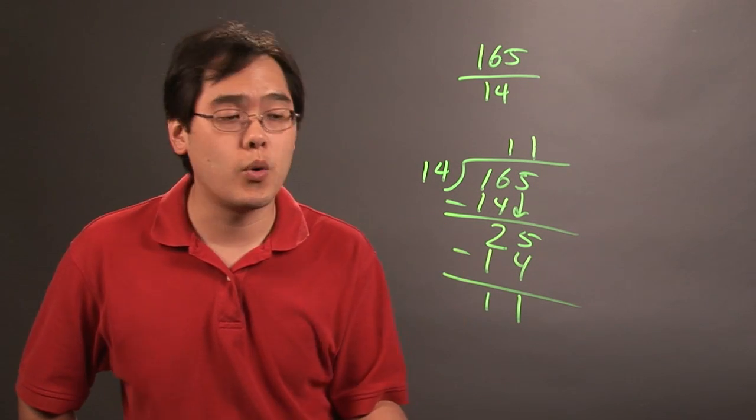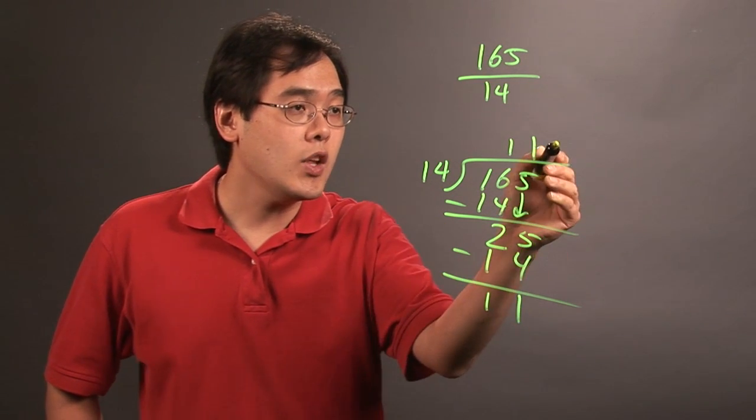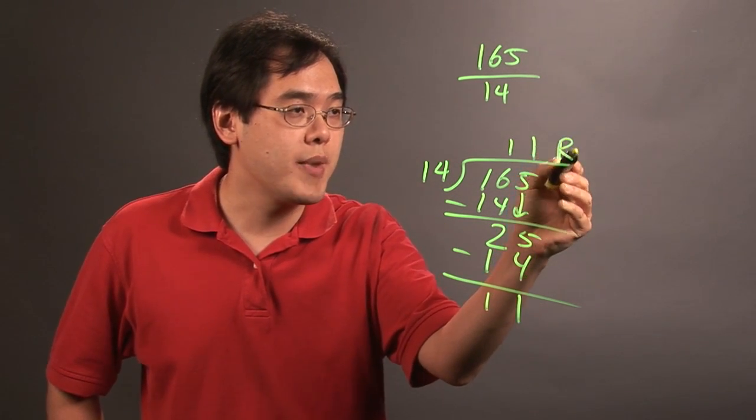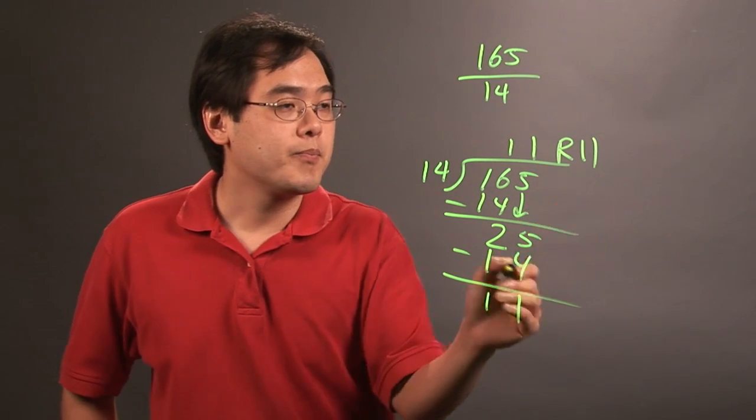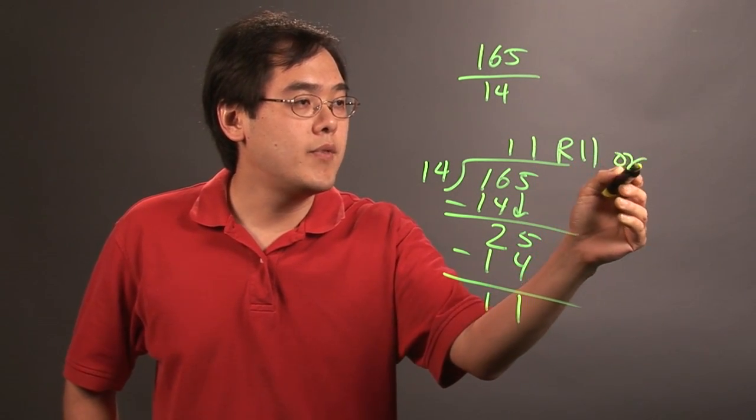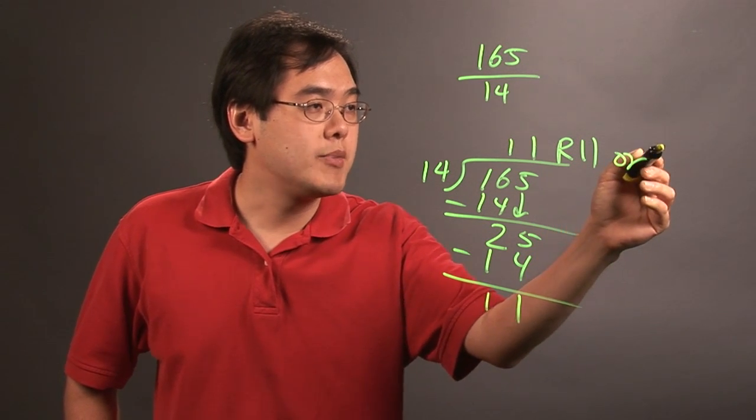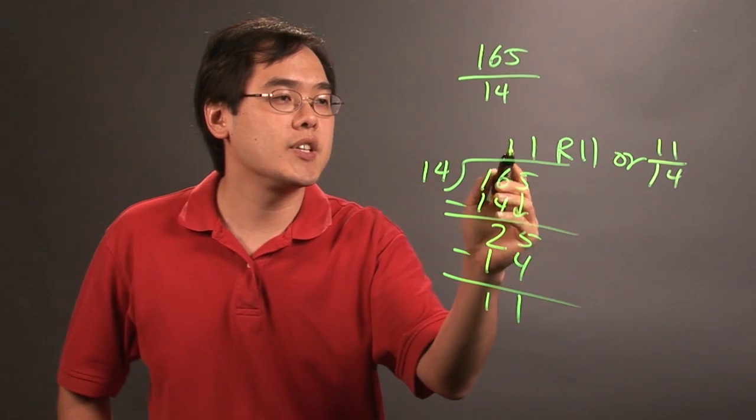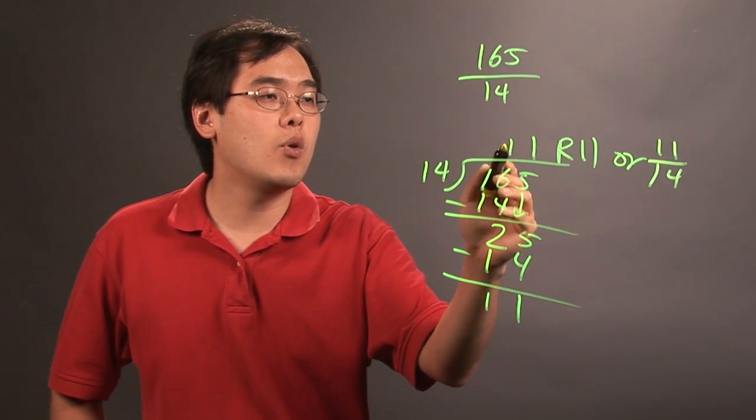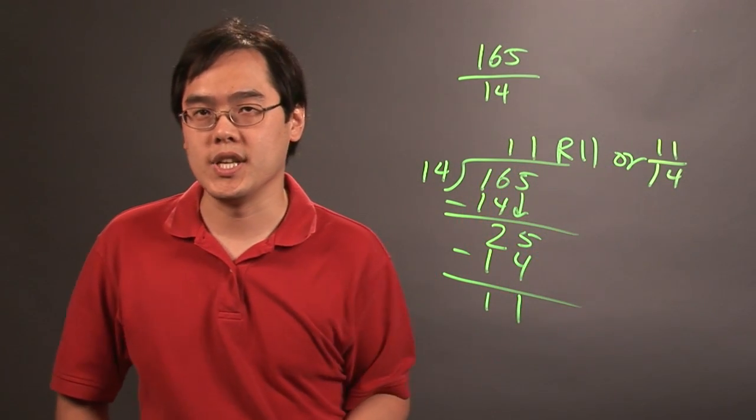Now that's as far as you can go, of course. And so you can do it two ways. You can do remainder 11, which is the formal way of remainder. Or some folks have opted to write the remainder over the divisor. So you can think of it as 11 remainder 11 or 11 and 11 14s.